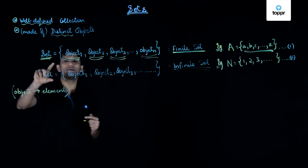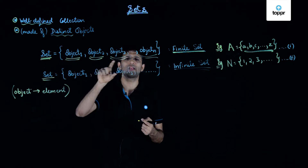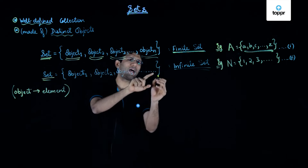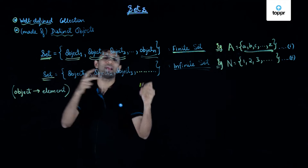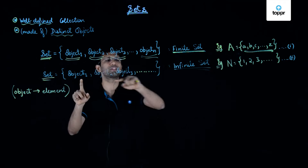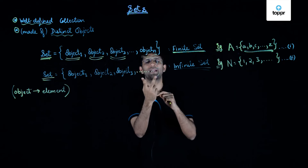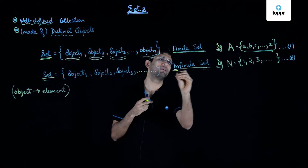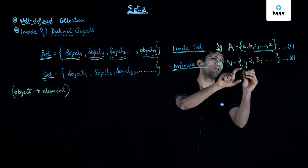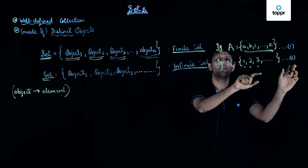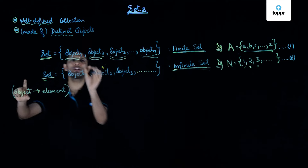Now let us look at the other kind of set. If a set has elements continuing on without a specified last object, the set is infinite — the number of elements in that set is not finite and it continues infinitely. Such sets in which the number of elements is infinite are known as infinite sets. For example, set N — the set of natural numbers — has an infinite number of elements, so it is an infinite set.